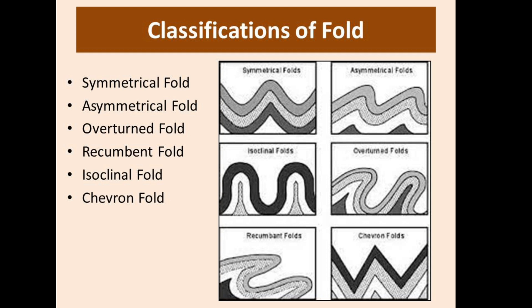Then the recumbent fold, in which both limbs are horizontal and the axial plane is also horizontal. The lower limb gets overturned. This is the fold in which fractures usually develop across bands to produce overthrusts — mostly overthrusts develop in recumbent folding.